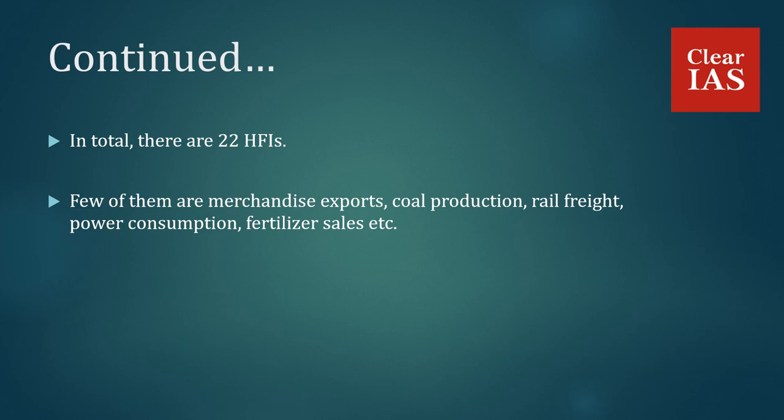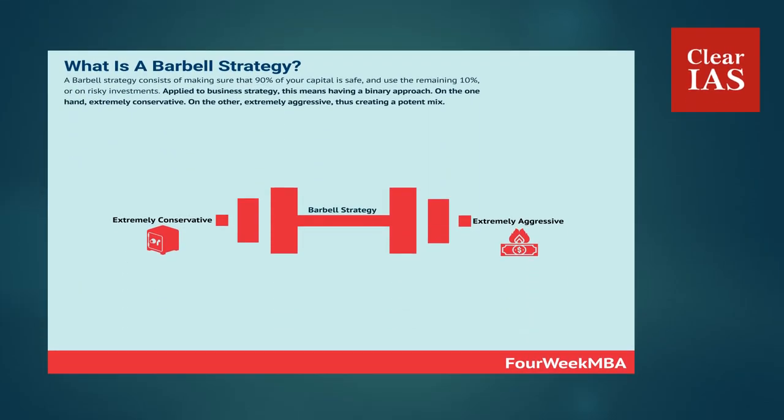The government monitored all these indicators on a regular basis and, based on the data collected, took the necessary action. This is how a barbell looks like — on one end, we have an extremely conservative approach, and on the other end, we have an extremely aggressive approach. When the pandemic hit the country, the government had the classic dilemma of lives versus livelihood. The government had to choose between improving the economy or improving the lives of the people; however, both are interlinked. So the government took the middle path and focused on improving both the economy as well as the lives of the people.